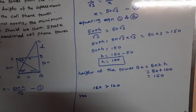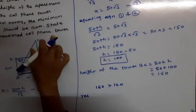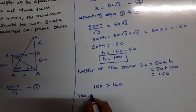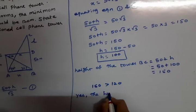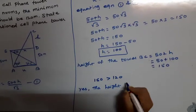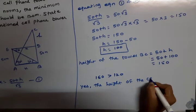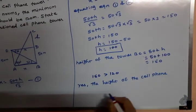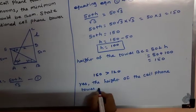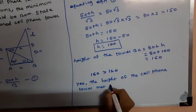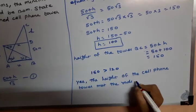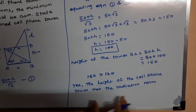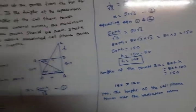The height of the cell phone tower is 150 meters, which meets the radiation norms, since 150 meters is greater than the required minimum of 120 meters.